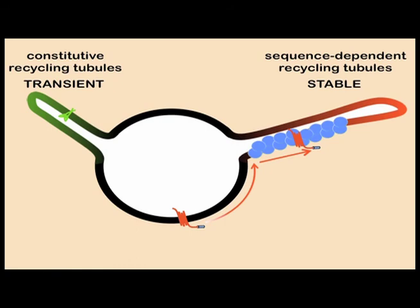Once the receptors entered the tubules, they were concentrated by the interactions of their tail domains with the actin cytoskeleton. Indeed, simply replacing the tail of the receptors with an independent actin binding domain was sufficient for concentration in these tubules and for recycling.